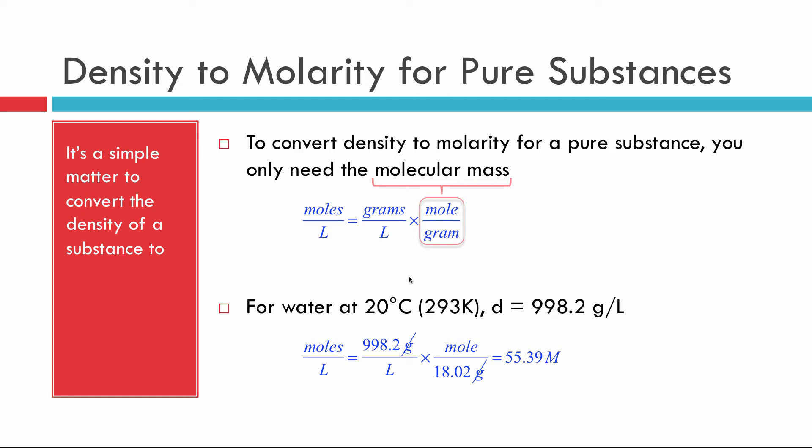So it has a constant. If I had three ounces of water, guess what? It would have a concentration of 55.39. If I have a swimming pool full of pure water at 20 degrees C, 55.39 molar. That's what the concentration would be. Fantastic.